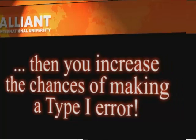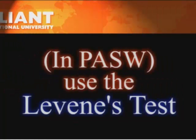In SPSS, or now called PASW, you can check the Levene's test, which is a test that subtracts the mean from each data point and then does an ANOVA on the resulting numbers. In SPSS, if you find that your Levene's test has a significant number — less than 0.05 or 0.01 or whatever your cutoff is — then you have significantly violated homogeneity of variance.